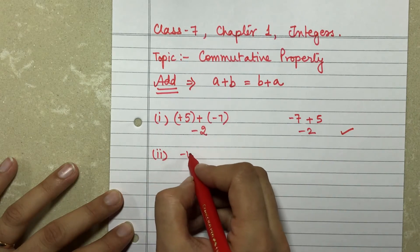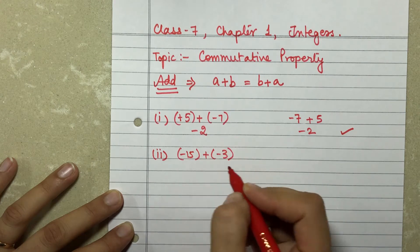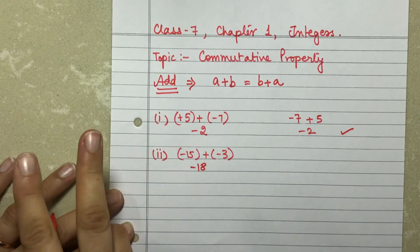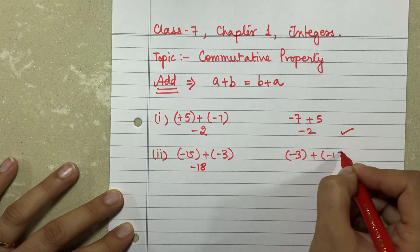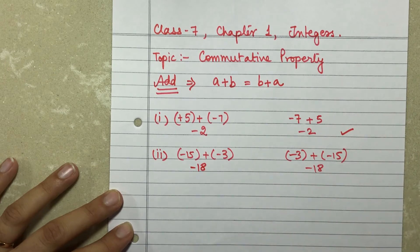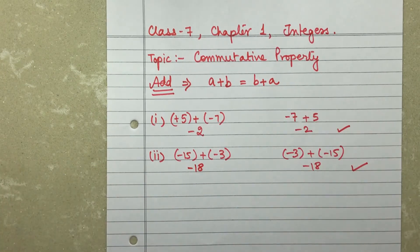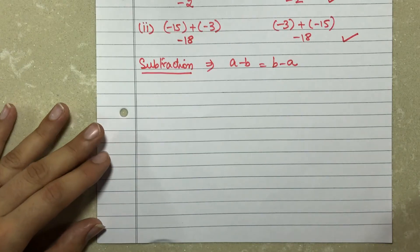Let's check one more example to validate that it happens every time. Minus 15 plus minus 3 gives me an answer minus 18. Now if I switch the positions, it will be minus 3 plus minus 15 — again the answer comes out to be minus 18. That means the commutative property stands true for addition of integers.